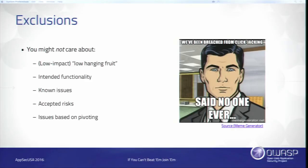Be a little more specific — say 'only clickjacking with a proof of concept on a sensitive function.' That points researchers in the right direction so they only create clickjacking reports if they have a proof of concept demonstrated on sensitive functionality. Other things to consider are intended functionality. An HTML editor is a common example — a researcher is going to inject into the HTML editor, somewhere that injection fires, and they may consider that cross-site scripting. Call that out and say there's an HTML editor and that's intended functionality, not cross-site scripting.